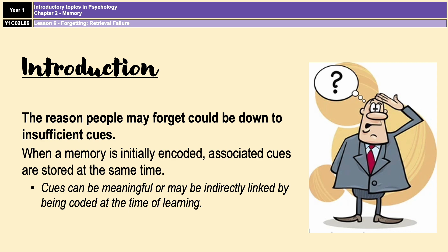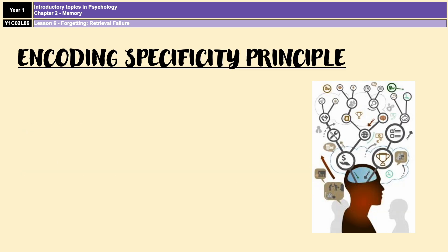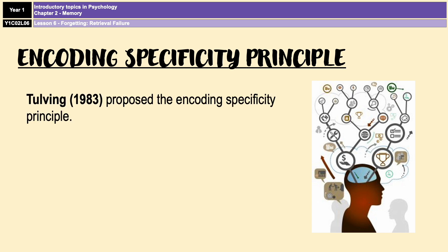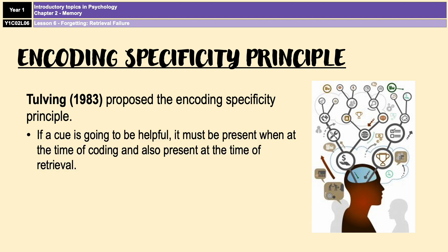At the very heart of retrieval failure is something known as the encoding specificity principle, which was put forward by Tulving in 1983. It is a very simple concept that says that any cues present at the time of coding a memory must also be present at the time of retrieval. If that's not the case, then forgetting in some form or another is likely to occur.